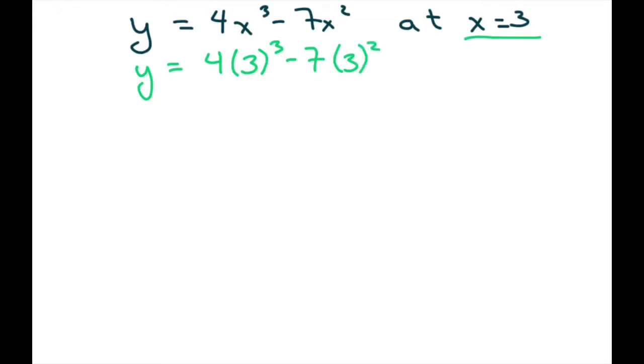So if you put all that in, you're going to get 108 minus 63, and that's going to equal 45. So basically our point is 3 comma 45.